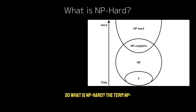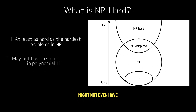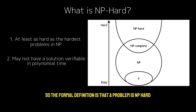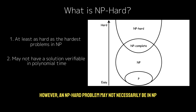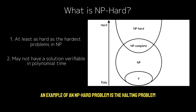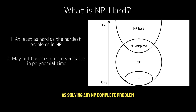So what is NP-hard? The term NP-hard refers to problems that are at least as hard as the hardest problems in NP, but they may not themselves belong to NP. NP-hard problems might not even have a solution that can be verified in polynomial time, but solving them would be at least as difficult as solving the hardest NP-complete problems. An example of an NP-hard problem is the halting problem, which asks whether a given program will halt or run forever. This problem is not in NP because it's impossible to verify a solution in polynomial time, but it is NP-hard because solving it would be at least as difficult as solving any NP-complete problem.